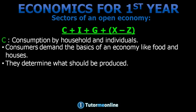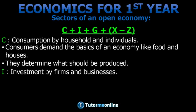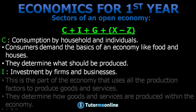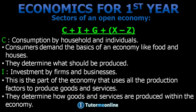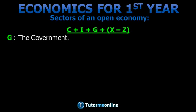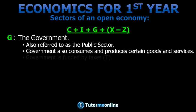I is for investment by firms and businesses. This is the part of the economy that uses all the production factors to produce goods and services. They determine how goods and services are produced within the economy. G is for the government, also referred to as the public sector. Government also consumes and produces certain goods and services, and is funded by taxes.